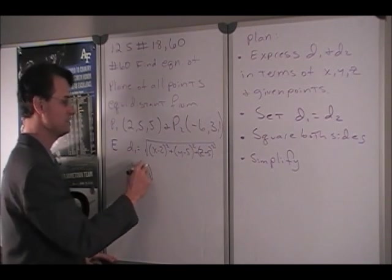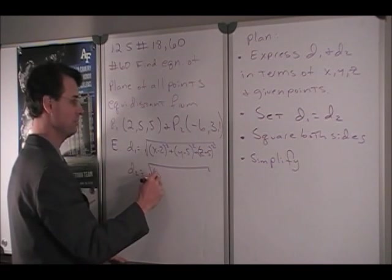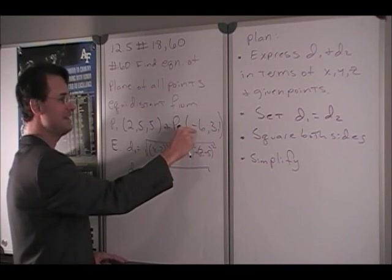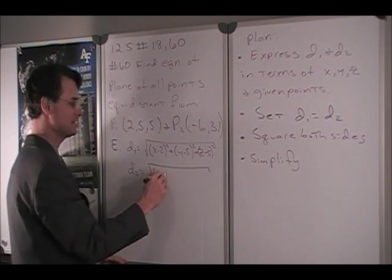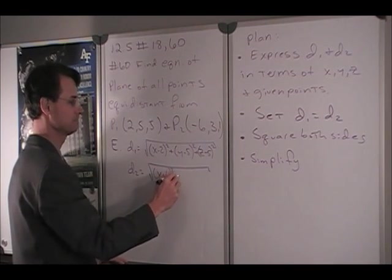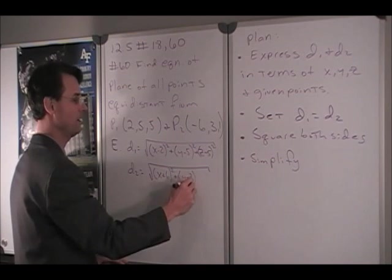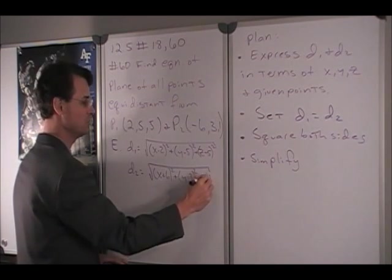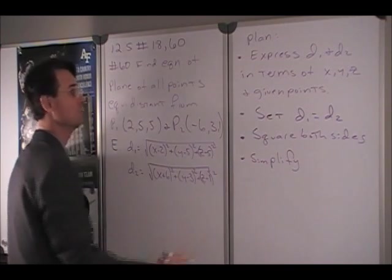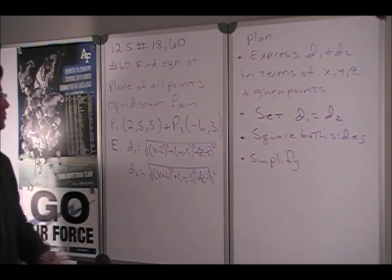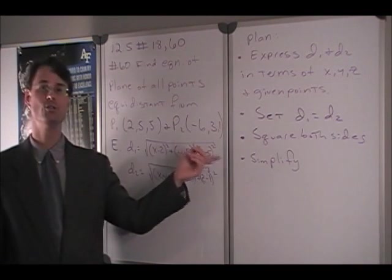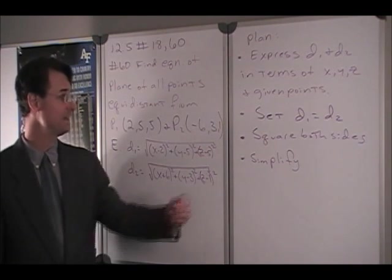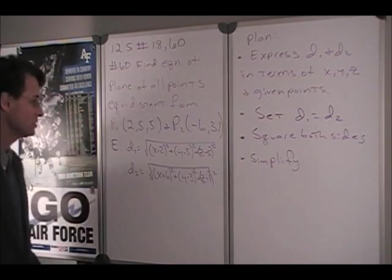D2 is analogous. The square root of X, well, X minus negative 6 is X plus 6, Y minus 3 squared plus Z minus 1 squared. All right, so I'm going to go ahead and do a little bit of this in my head. Set them equal and square both sides.